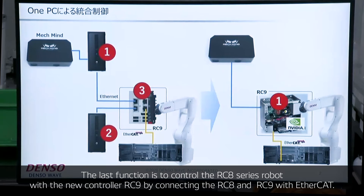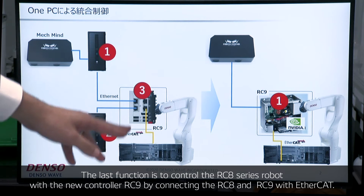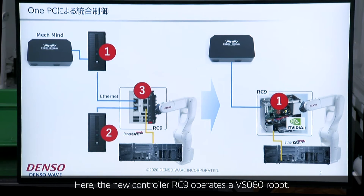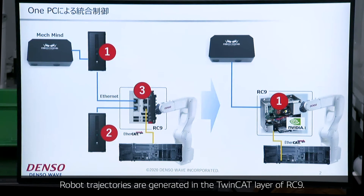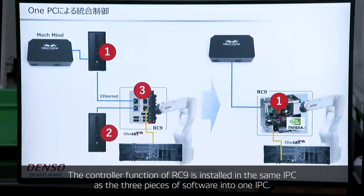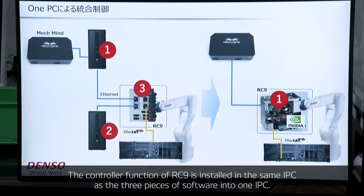The last function is to control the RC8 series robot with the new controller RC9 by connecting RC8 and RC9 with Ethernet. The new controller RC9 operates a DS-06 robot, and the robot trajectories are generated in the TwinCAT real-time layer of RC9, so RC8 is used as a motion driver. The controller function of RC9 is installed in the same IPC as the other three pieces of software — all into one.